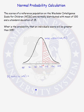In this problem, we will do three normal probability calculations using a calculator. The scores of a reference population on the Wechsler Intelligence Scale for Children are normally distributed with a mean of 100 and a standard deviation of 15.